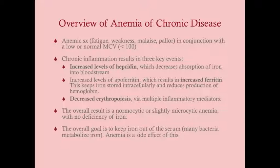There is an evolutionary goal behind anemia of chronic disease — it is an adaptive response to keep iron away from bacteria. Early on, the primary causes of inflammation were bacteria like E. coli and Klebsiella, which metabolize iron. Before antibiotics, it made sense for the body to starve those bacteria by reducing serum iron, achieved by increasing apoferritin and ferritin.